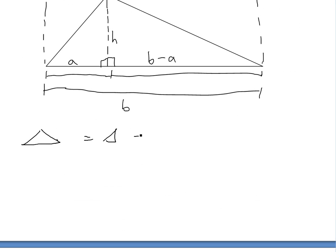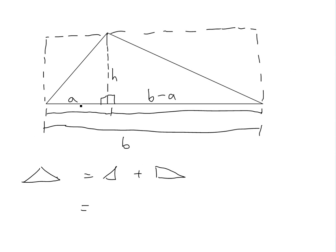This triangle is going to equal to this right angle plus this right angle. And this just equals base times height divided by two for a right-angled triangle.